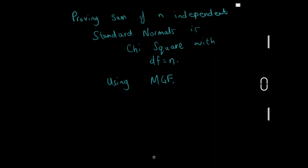Okay, welcome everyone. I am Ansar, your hopping hand, and in this video we are going to be proving that the sum of n independent standard normals is a chi-squared with n degrees of freedom.